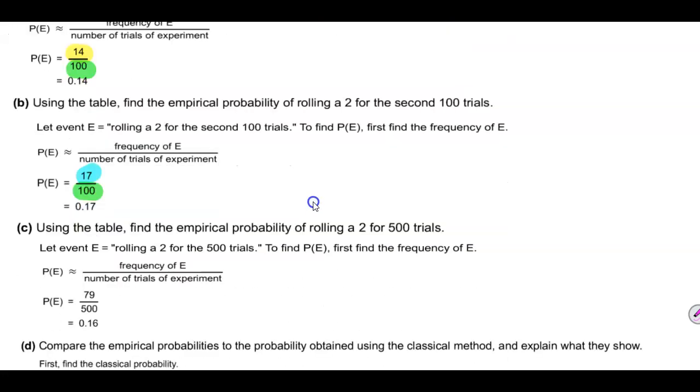So we're taking 79. But since we're dealing with 500 trials, we're dividing by 500 trials. Therefore it's 79 over 500, which gives you 0.16.